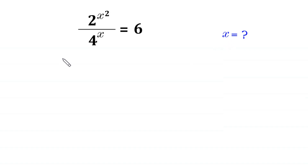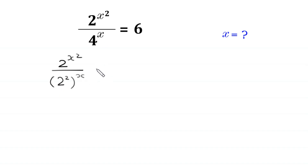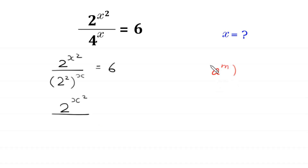Let's start. 2 to the power x squared divided by — this 4 can be written as 2 squared, whole to the power x, is equal to 6. Next, by using the power rule — a to the power m, whole to the power n, is equal to a to the power m times n — this 2 to the power 2, whole to the power x, will become 2 to the power 2 times x, is equal to 6.